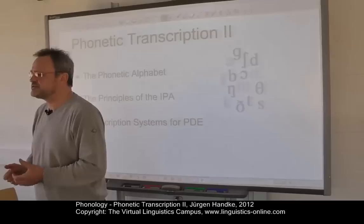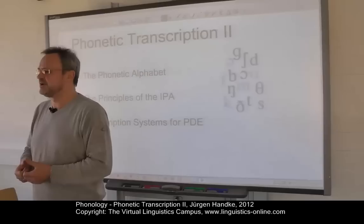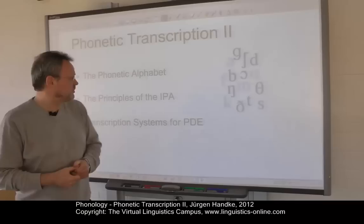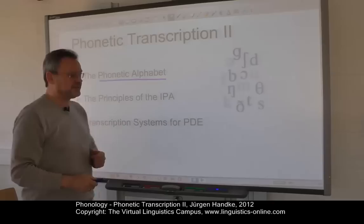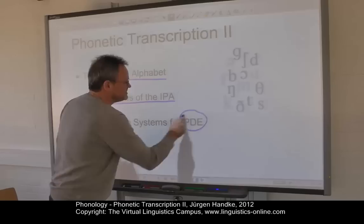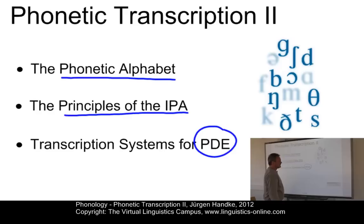The most suitable backbone of an international phonetic alphabet is the Roman alphabet. It uses the most well-known characters and is employed by the majority of languages with a phonographic writing system. Such an alphabet has been developed by the International Phonetic Association. This unit looks at the general structure of the International Phonetic Alphabet, discusses the principles of the International Phonetic Association, and will define transcription systems for present-day English.